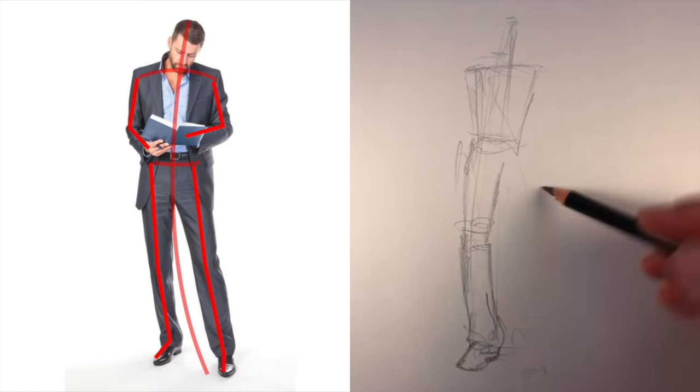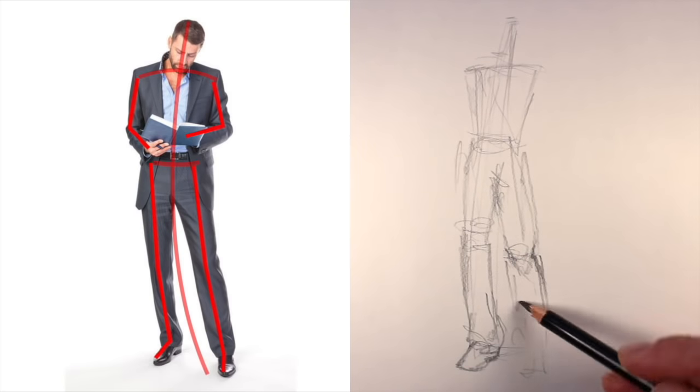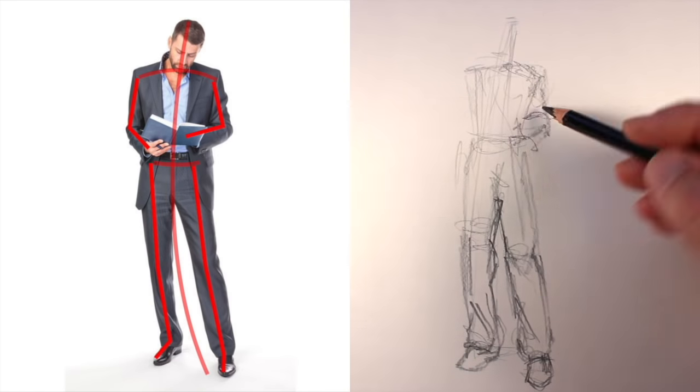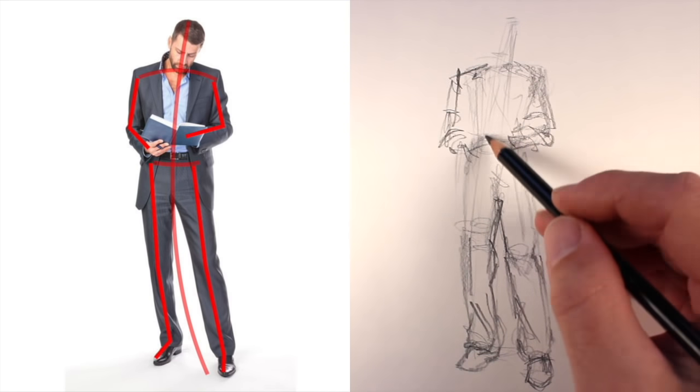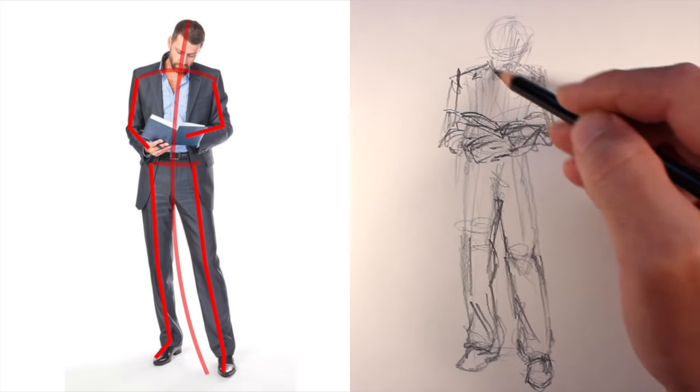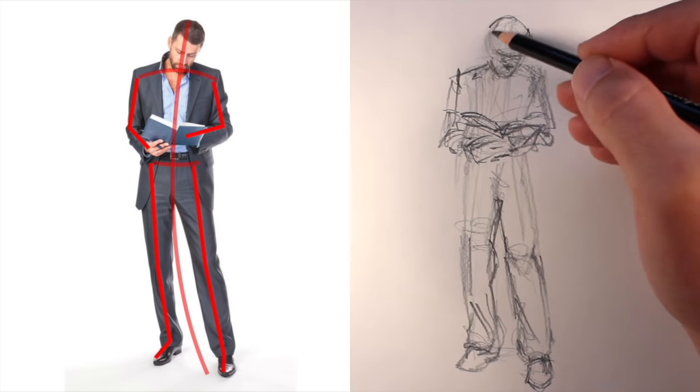Remember, the goal here is to draw loosely, so I'll make lots of different lines as I seek to find the form of the figure. It doesn't have to be exact, and it doesn't need to be anywhere near perfect. We're going for speed here. We're trying to draw quickly and loosely.